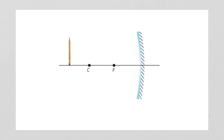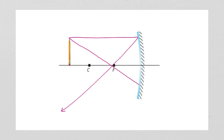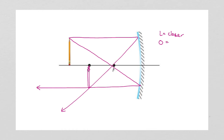In this next example, the object is behind the center of curvature and the focal point. We draw a horizontal light ray in, reflect it through the focal point, then draw the next one through the focal point until it hits the mirror, reflecting it back. We locate the image — it's closer to the mirror than the object. The orientation is inverted, the size is a little bit smaller, and the type is real again.